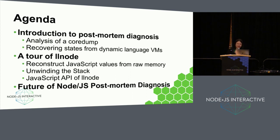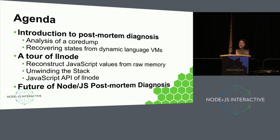Let's go over the agenda here. We are going to first have an introduction to postmortem diagnostics. Then we'll dive into a case study on how it works on a specific JavaScript engine, in this case V8, and how it works with a specific debugger, in this case Lnode, working on top of LDB. We'll also cover the JavaScript API of Lnode, then look into the vision that we started two years ago at Node Interactive Europe.